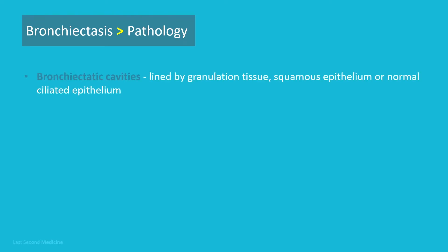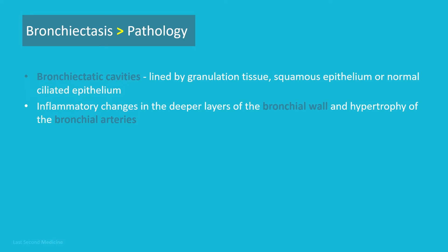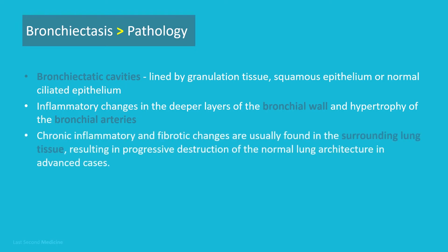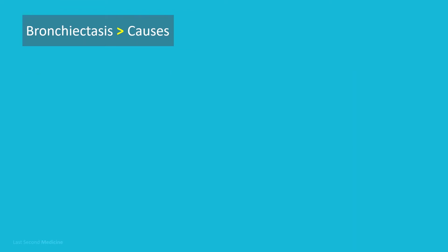The result is chronic inflammation and infection of the bronchi and bronchioles leading to permanent dilatation and thinning of these airways. The bronchiectatic cavities may be lined by granulation tissue, squamous epithelium, or normal ciliated epithelium. There may also be inflammatory changes in the deeper layers of the bronchial wall and hypertrophy of the bronchial arteries. Chronic inflammation and fibrotic changes are usually found in the surrounding lung tissue, resulting in progressive destruction of the normal lung architecture.